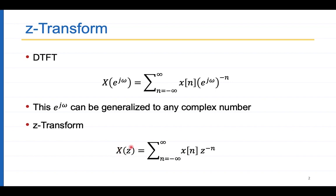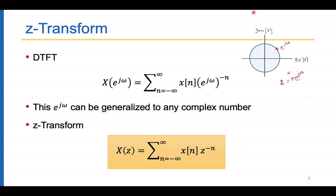More formally, X(z) is given by the sum of x[n] z to the power minus n. Both are the same when z equals e to the power j omega for any omega between 0 to 2 pi. In the complex plane, e to the power j omega is any point on the unit-radius circle, but z could be anywhere — it can be r times e to the power j omega for any r.